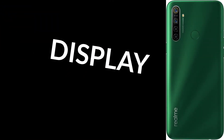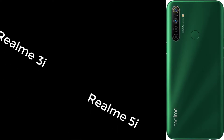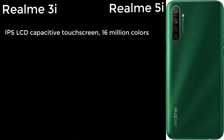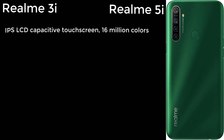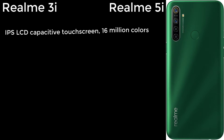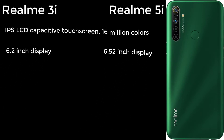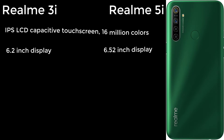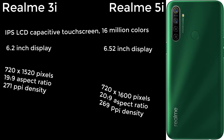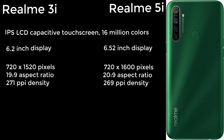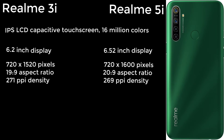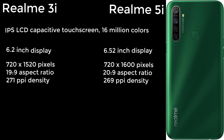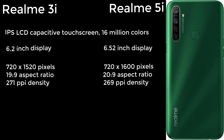First we will check the display. Both phones come with an IPS LCD capacitive touchscreen with 16 million colors. The Realme 3i has a 6.2-inch display with a resolution of 720 by 1520 pixels and a 19:9 aspect ratio with 271 ppi density.